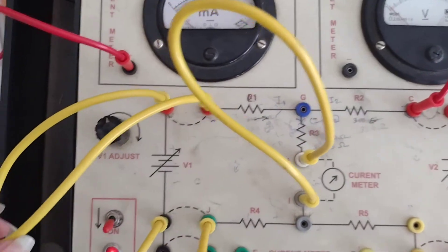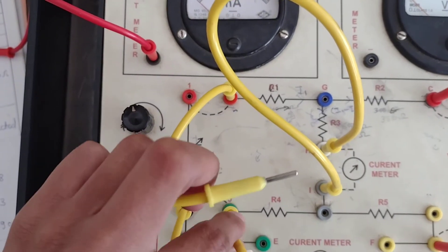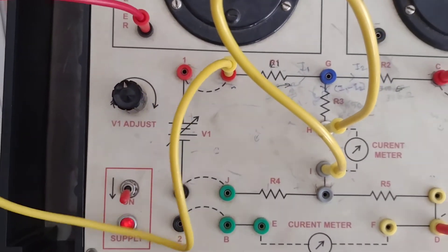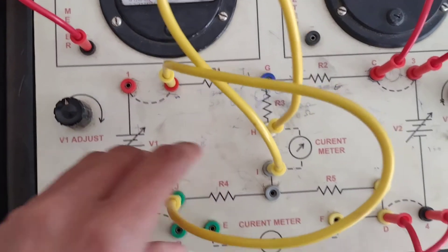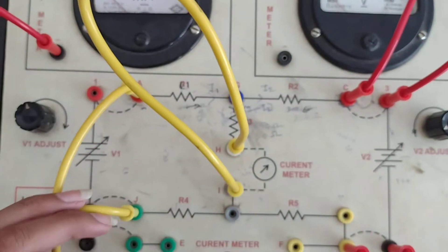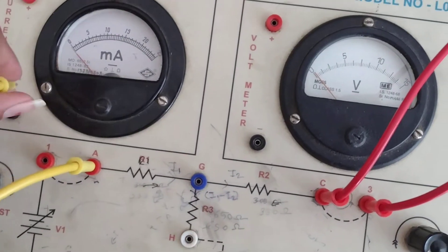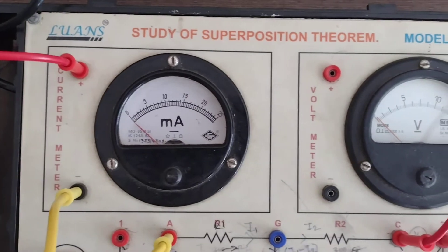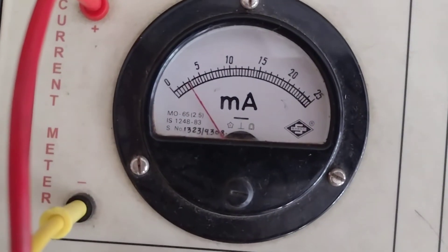Now I'm going to remove the V1 source. I've removed the V1 source. Now we measure the current flowing through the branch, which is I2, equal to 3 milliamperes.